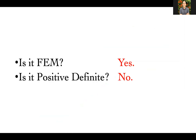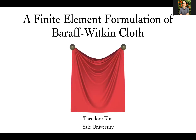In summary: Baraff-Witkin is definitely a finite element model — don't call it mass-spring. Second, it is not positive definite and goes indefinite regularly. To guarantee positive definiteness, grab the projection code from the paper. Thank you for your attention.